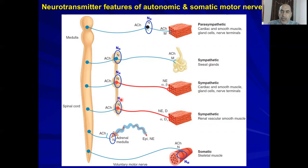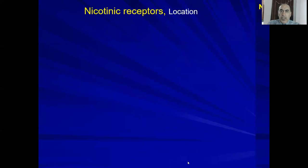The N in NN stands for neural or ganglion type, and M stands for muscle type. Everything coming out of the CNS uses acetylcholine with nicotinic receptors. Everything in a ganglion is NN, and the receptor on the adrenal medulla is also NN. The receptor on muscle is NM.